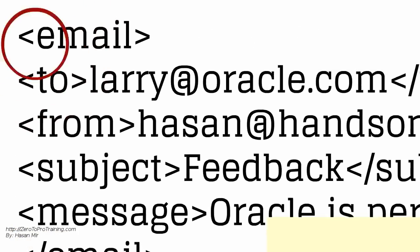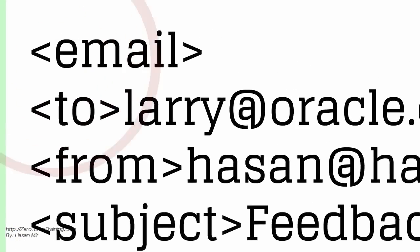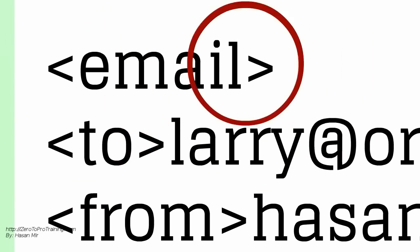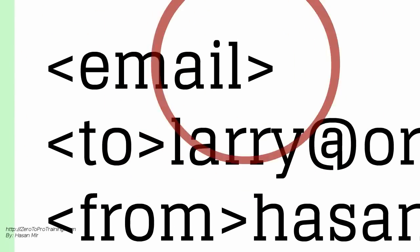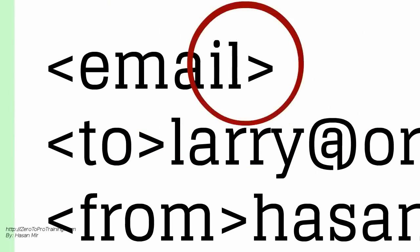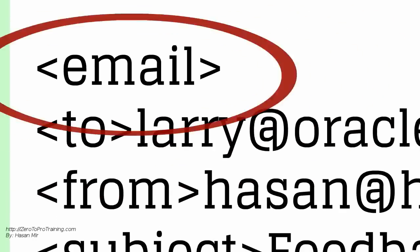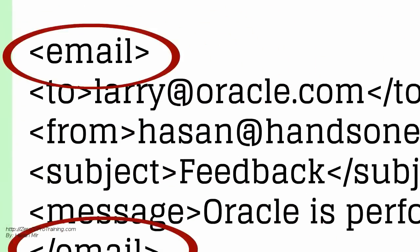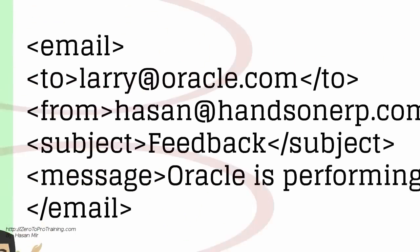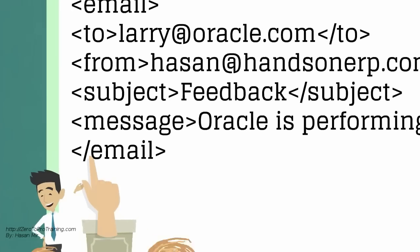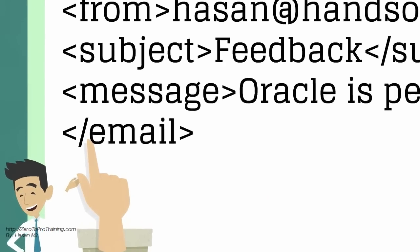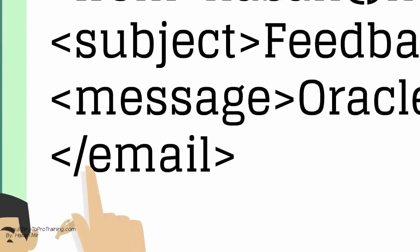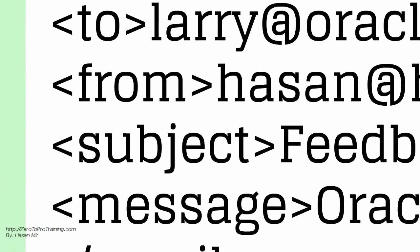A tag begins with a less-than symbol and ends with a greater-than symbol. Tags are in pairs — we have a starting tag and then the ending tag. The end tags include a slash symbol before the element's name. This symbol is not there in the starting tag.